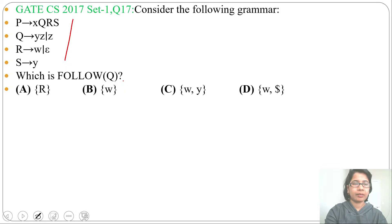Let's analyze the grammar. Just check in the RHS where Q is present. Q is present here, and after Q, R is given.